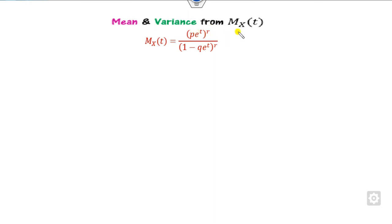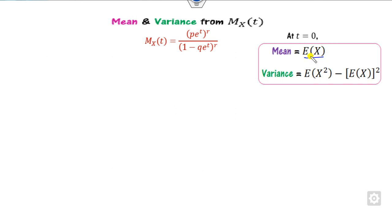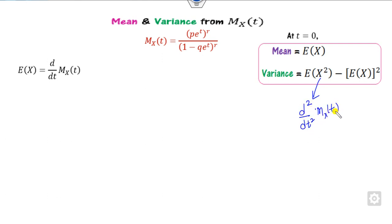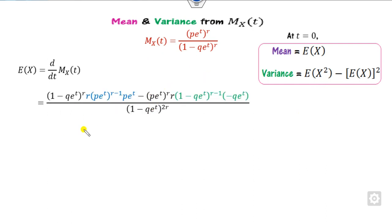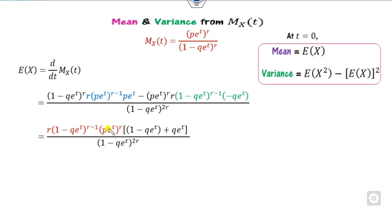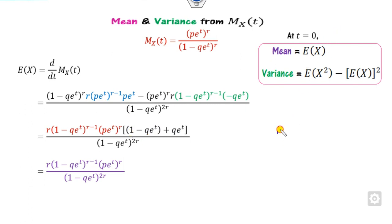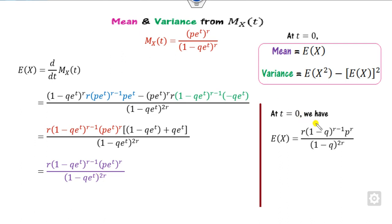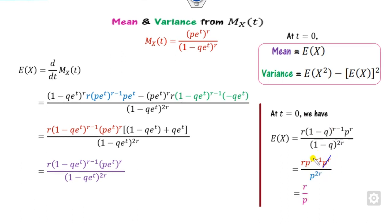Based on this MGF you can find the mean and variance. The mean is E[X] and E[X²], evaluated at t equals 0. E[X] is the first derivative of the MGF at t equals 0. Taking the first derivative using the u over v rule, you simplify and take the common factor from the numerator. When you substitute t equals 0, each exponential term becomes 1, and since 1 minus q equals p, you get p raised to power r terms that cancel, leaving the mean equal to r over p.